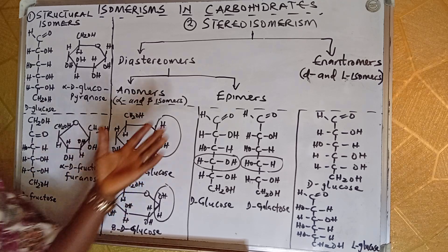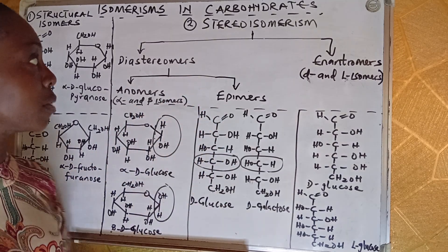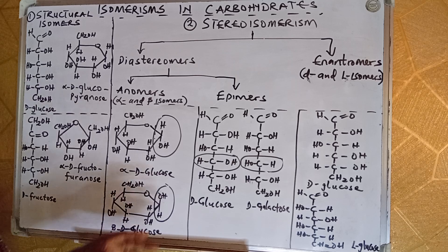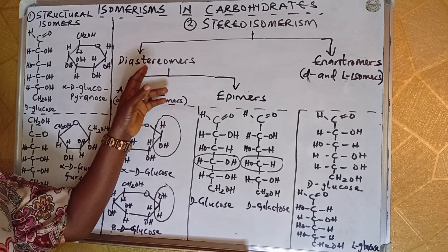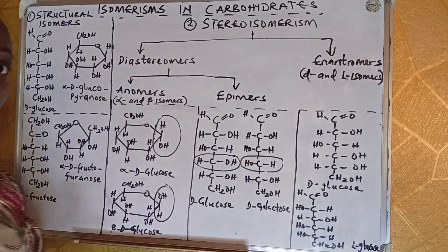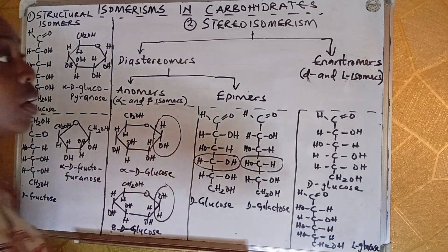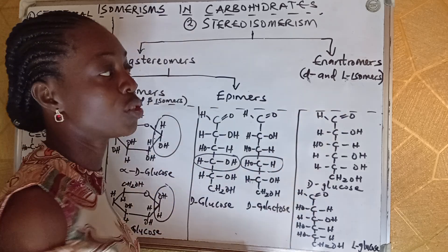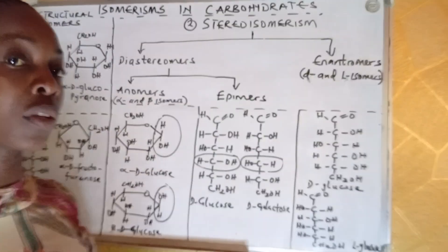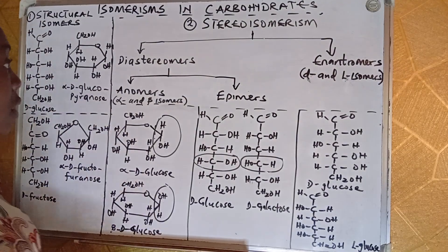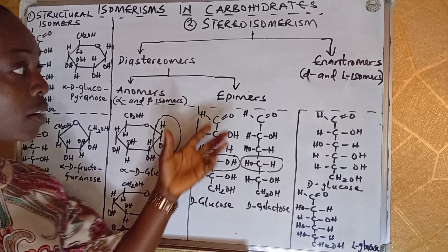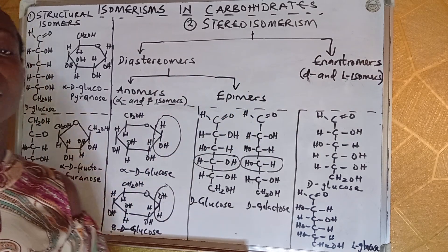For stereoisomers, we have two different types: diastereomers, those that are not mirror images of each other, and enantiomers, those that are mirror images of one another. Under diastereomers, we have anomers and epimers.